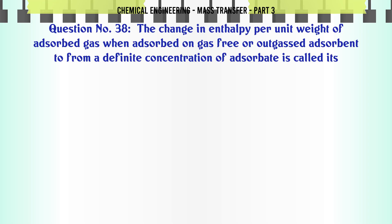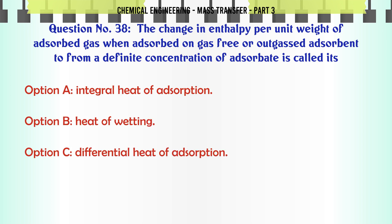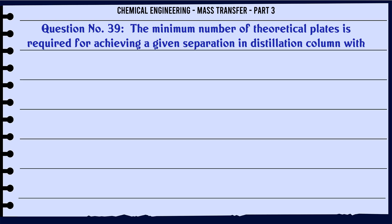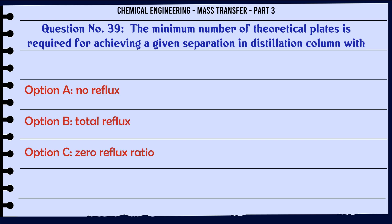The change in enthalpy per unit weight of adsorbed gas when adsorbed on gas-free or outgassed adsorbent to form a definite concentration of adsorbate is called its: A) integral heat of adsorption, B) heat of wetting, C) differential heat of adsorption, D) heat of normal condensation. The correct answer is: integral heat of adsorption.